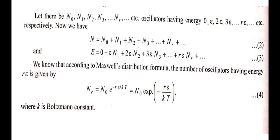For n₀ oscillators, the energy is 0; for n₁ oscillators, the energy is e; for n₂ oscillators, 2e; for n₃ oscillators, 3e; for n₄ oscillators, 4e; and so on. For nᵣ oscillators, the energy is re. So N = n₀ + n₁ + n₂ + n₃ + ... (Equation 2), and capital E = 0·n₀ + e·n₁ + 2e·n₂ + 3e·n₃ + 4e·n₄ + ... + re·nᵣ (Equation 3).